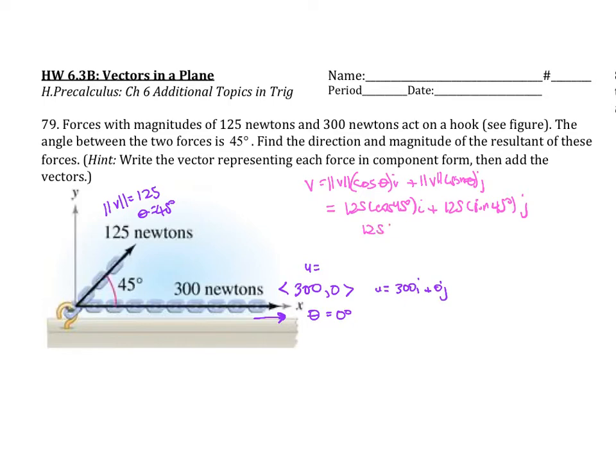We can simplify that to 125 root 2 over 2 i plus 125 root 2 over 2 j. So that is v.